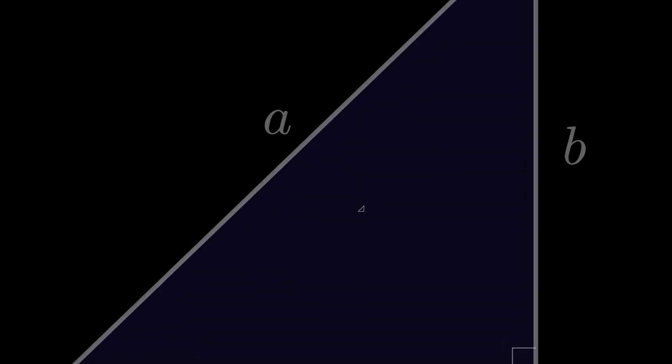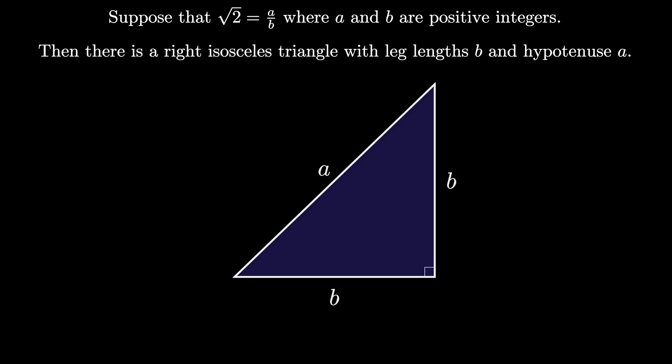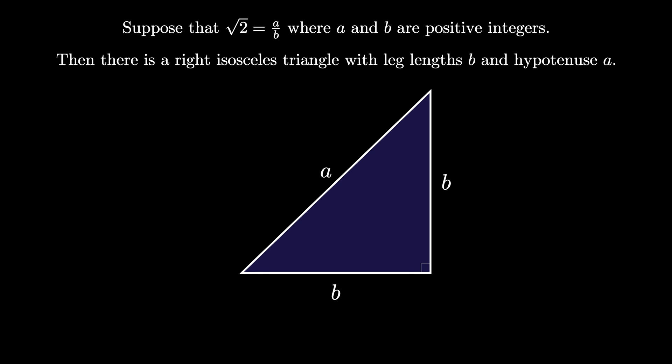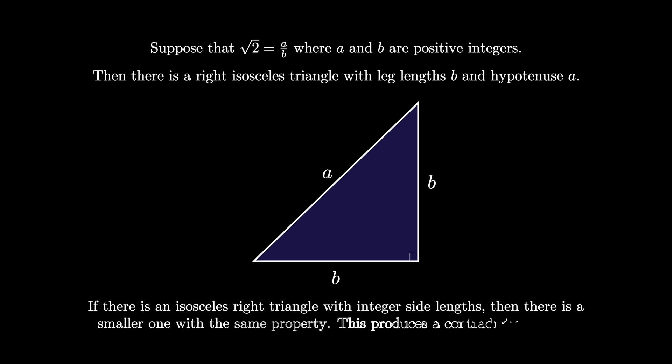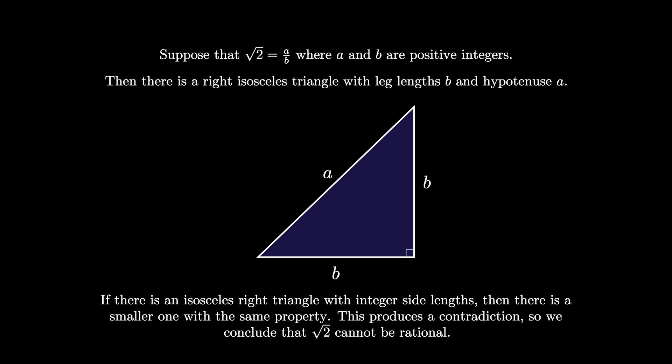To recap: if there were a right isosceles triangle with legs of length b and hypotenuse length a, with a and b integers, then there would be a smaller right isosceles triangle with the same property — smaller integer leg lengths and integer hypotenuse. The existence of such a triangle allows us to produce an infinite descent of positive integers, which is a contradiction. Therefore, the square root of 2 cannot be rational and must be irrational.